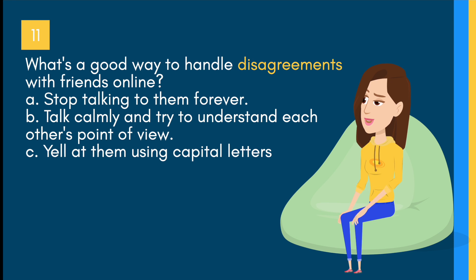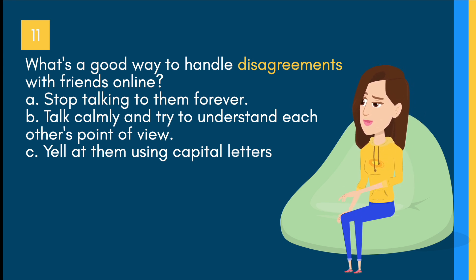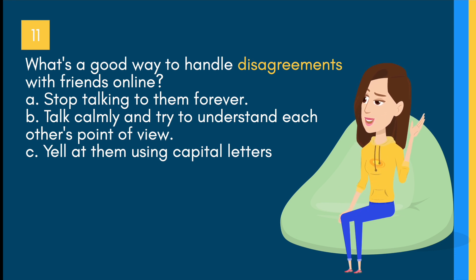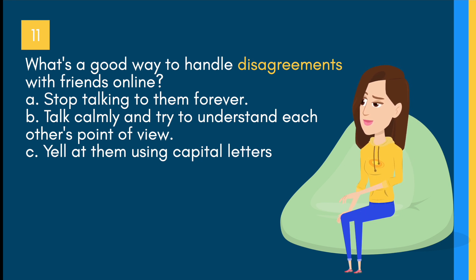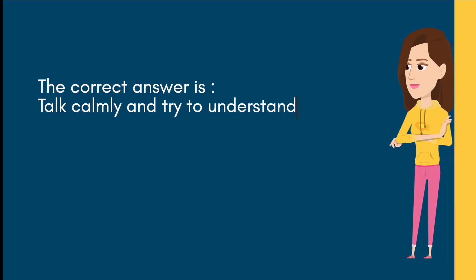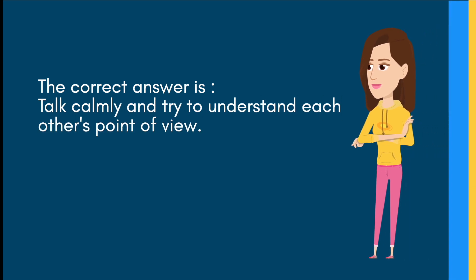What's a good way to handle disagreements with friends online? A) Stop talking to them forever, B) Talk calmly and try to understand each other's point of view, C) Yell at them using capital letters. The correct answer is: talk calmly and try to understand each other's point of view.